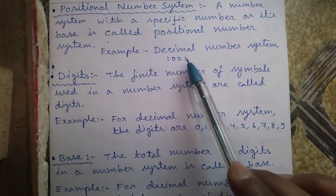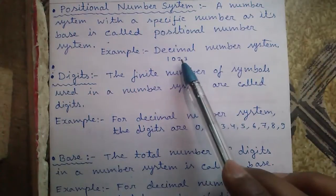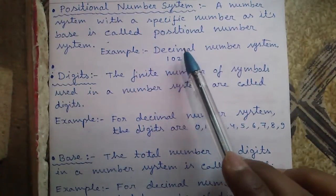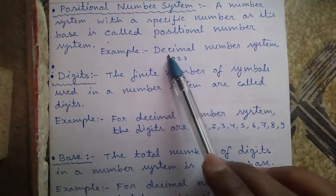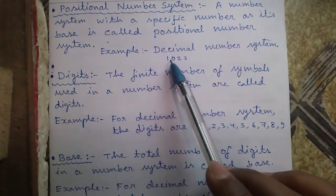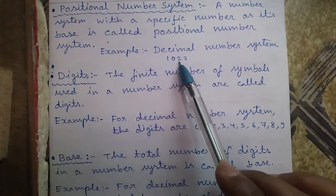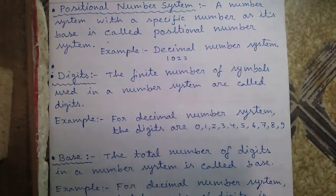For example, 3 is in position of 1, so 3 into 1, 2 in 10th position, so 2 into 10, 20 and 0 in position of 100 and 1 in position of 1000. So it becomes 1023 equals to 1023.